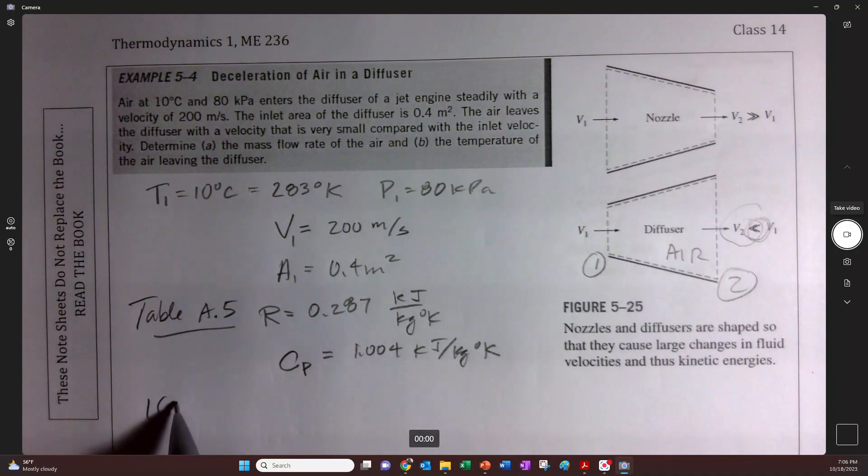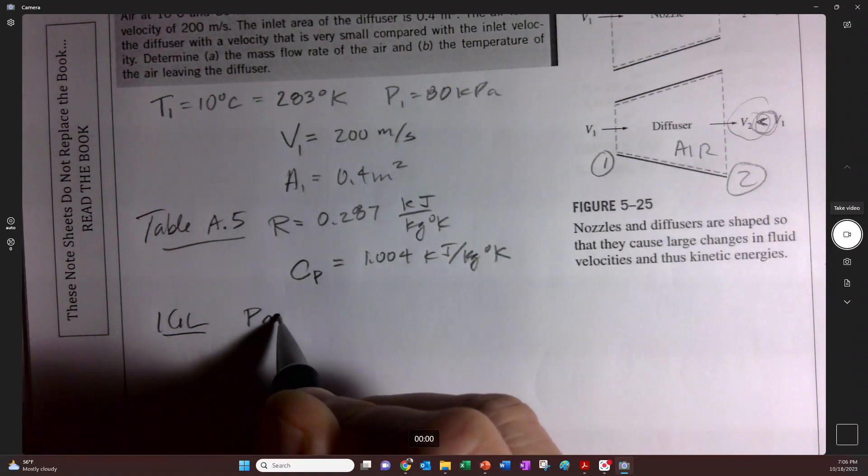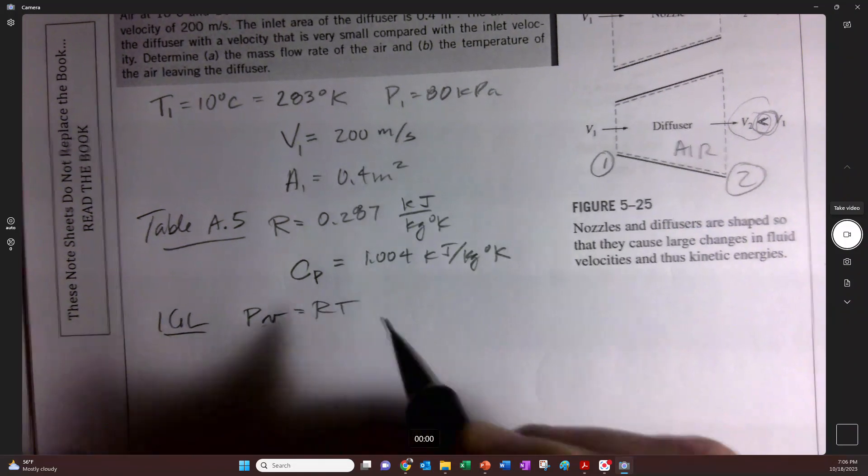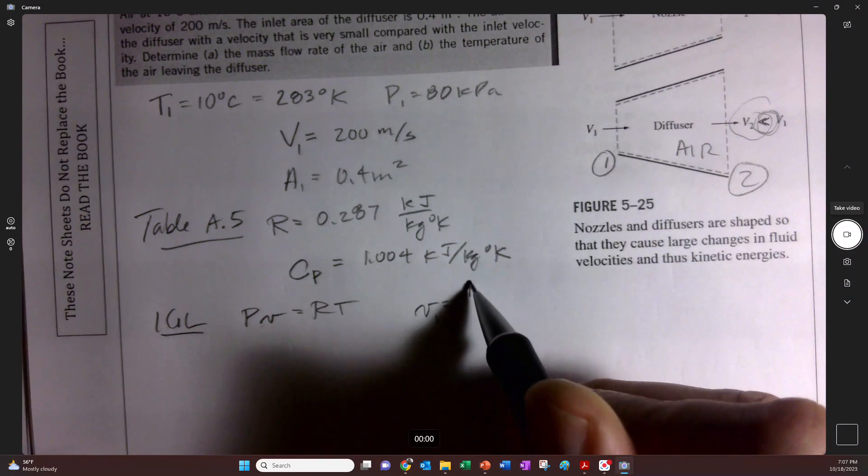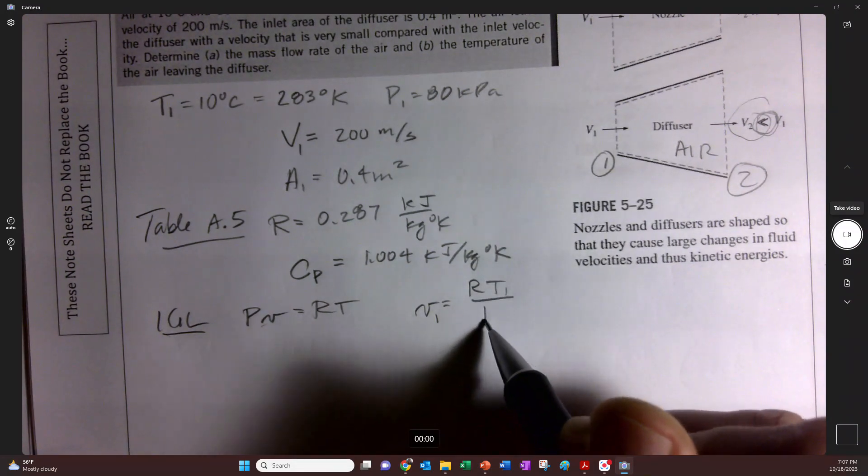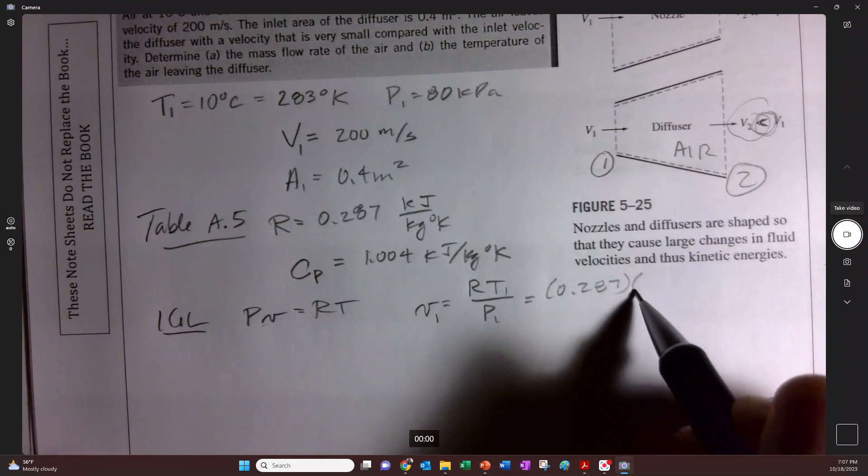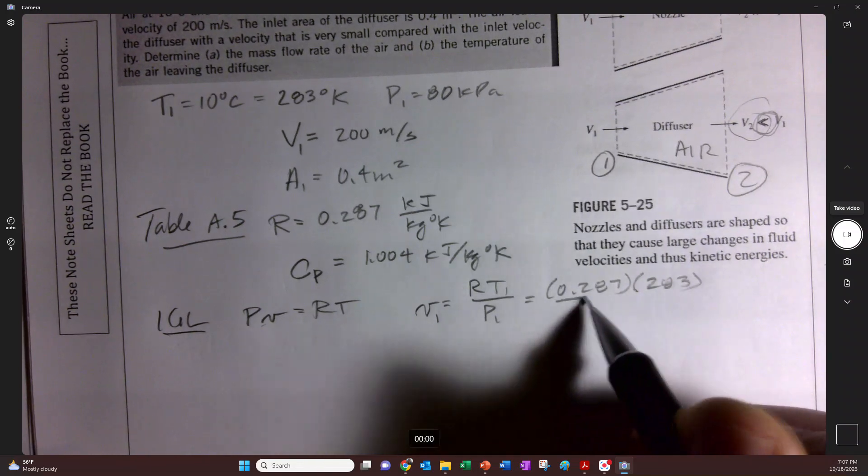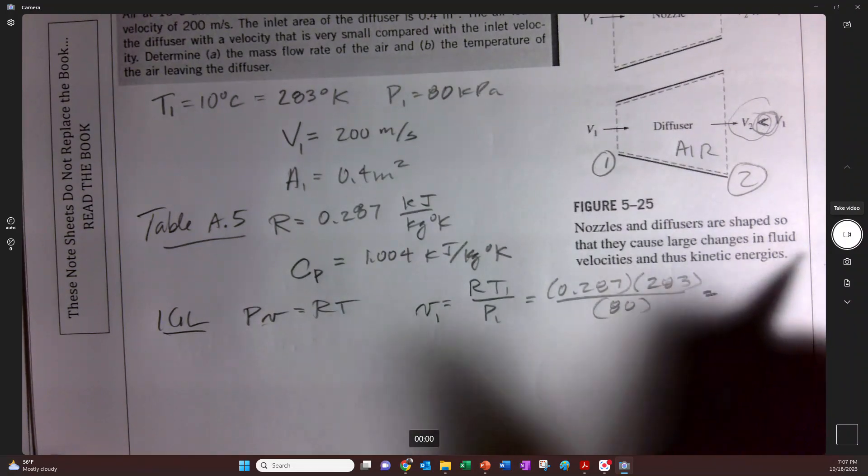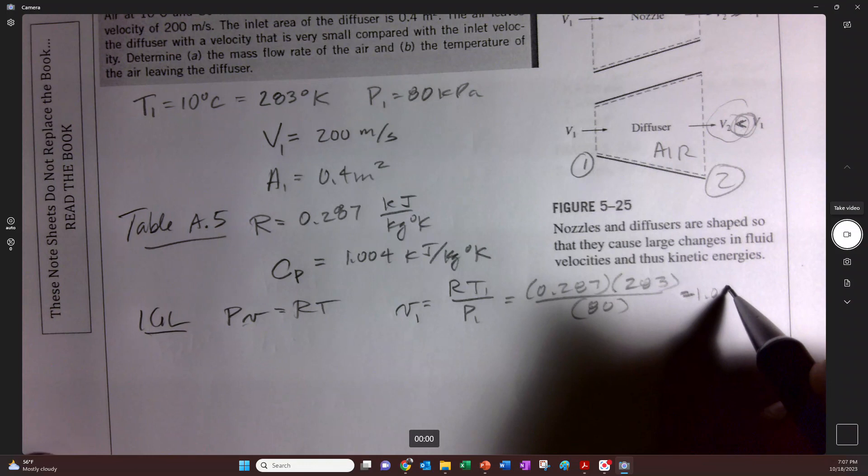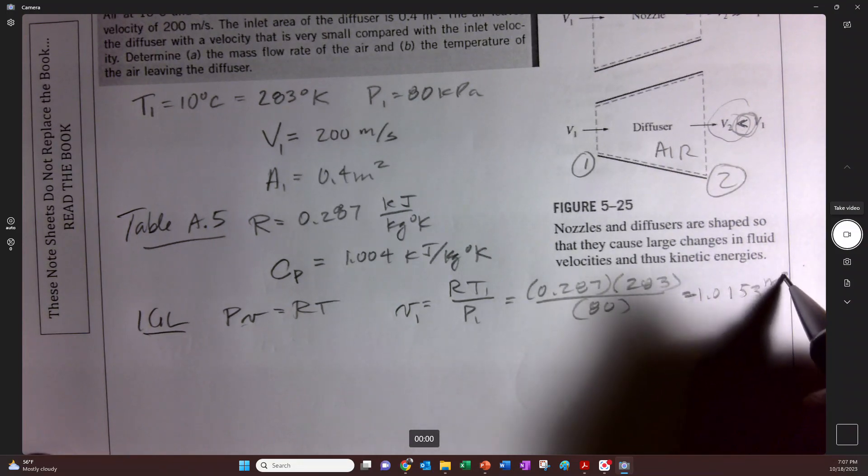And so the ideal gas law, P equals mRT, or P times specific volume V equals RT. We can find out what V is, V1, by taking RT1 and dividing it by P1. So 0.287 times 283 divided by 80, and we'll get 1.0153 cubic meters per kilogram.